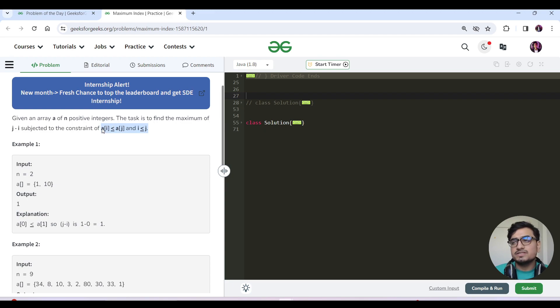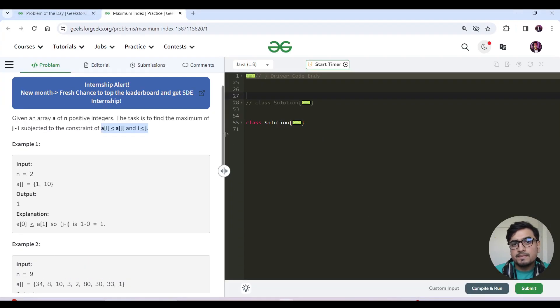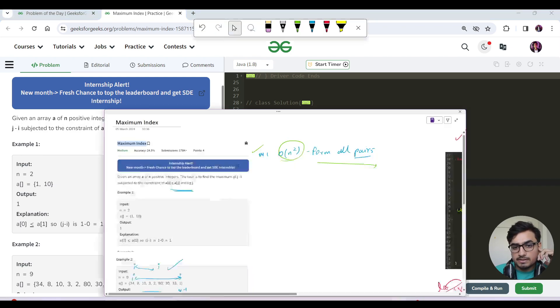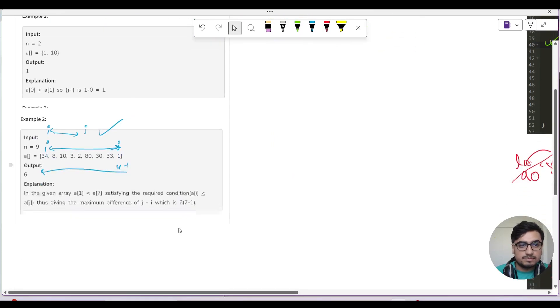The brute force approach is that we make all possible pairs and apply the given condition by the question and maintain the maximum. Forming all the pairs will definitely give you O(n²) complexity. Let us code this approach - this is a very naive approach. We have our answer to track the maximum difference and we have two nested for loops.